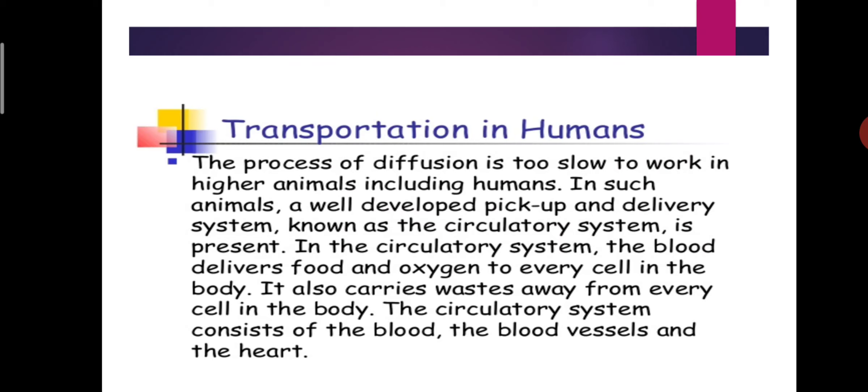The blood delivers food and oxygen to every cell in the body. It also carries waste away from every cell in the body. The circulatory system consists of three parts: blood, blood vessels, and the heart.